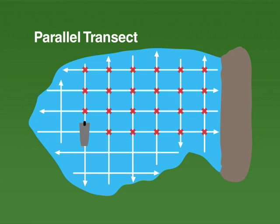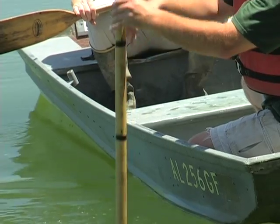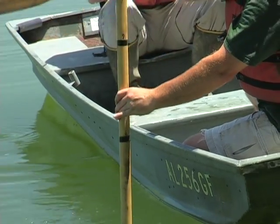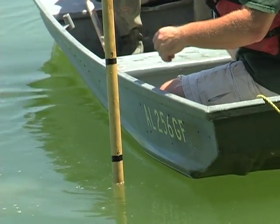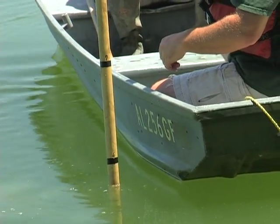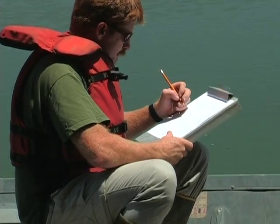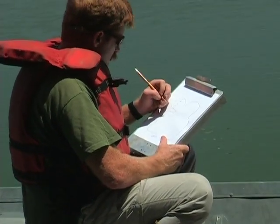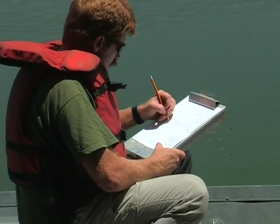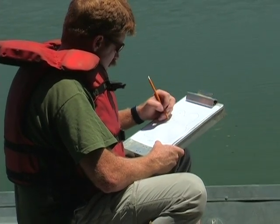Another approach is to establish several depth transects that run parallel along the length of the pond and several running parallel across the width. Each transect should be spaced evenly, forming a grid, and run from bank to bank. The best estimate would be to use all three methods and choose the largest one.